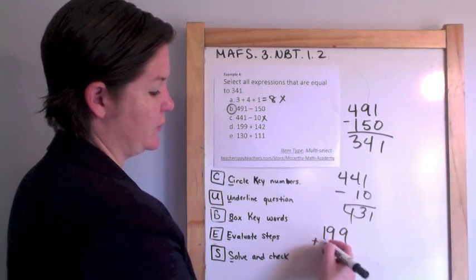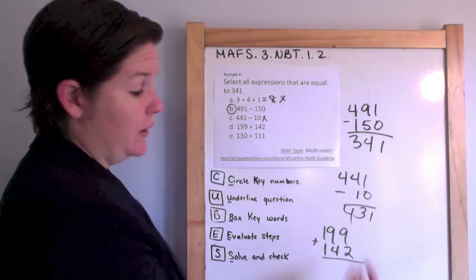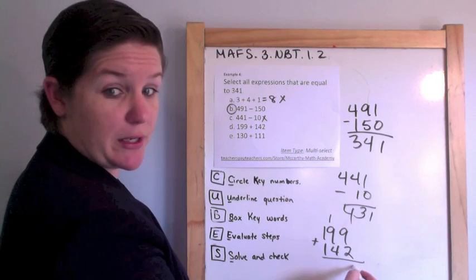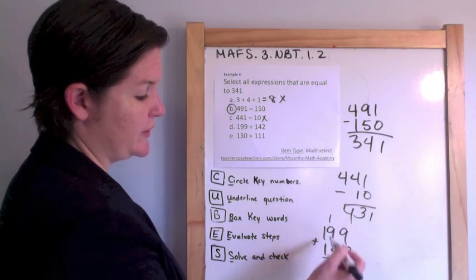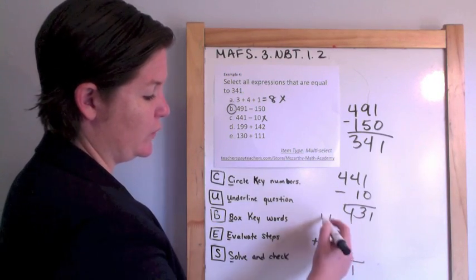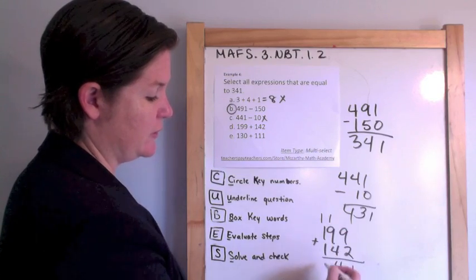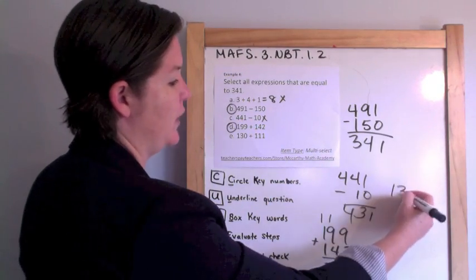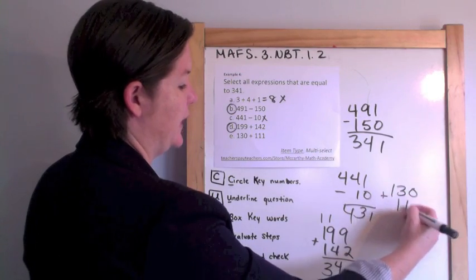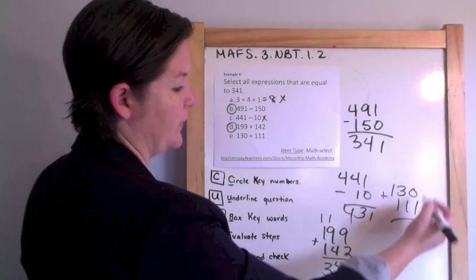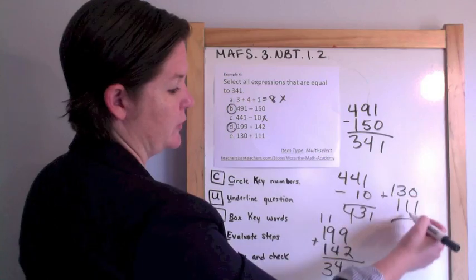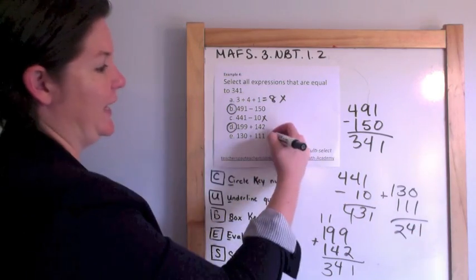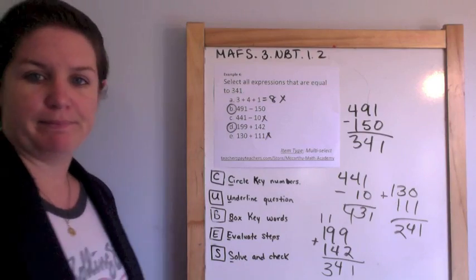199 plus 142. We've got 9 plus 2 is 11. 1 plus 9 is 10. 10 plus 4 is 14. And 341. D is the correct answer as well. Now we're adding these up. 0 plus 1, 1. 3 plus 1, 4. 1 plus 1, 2. 241. That is all.